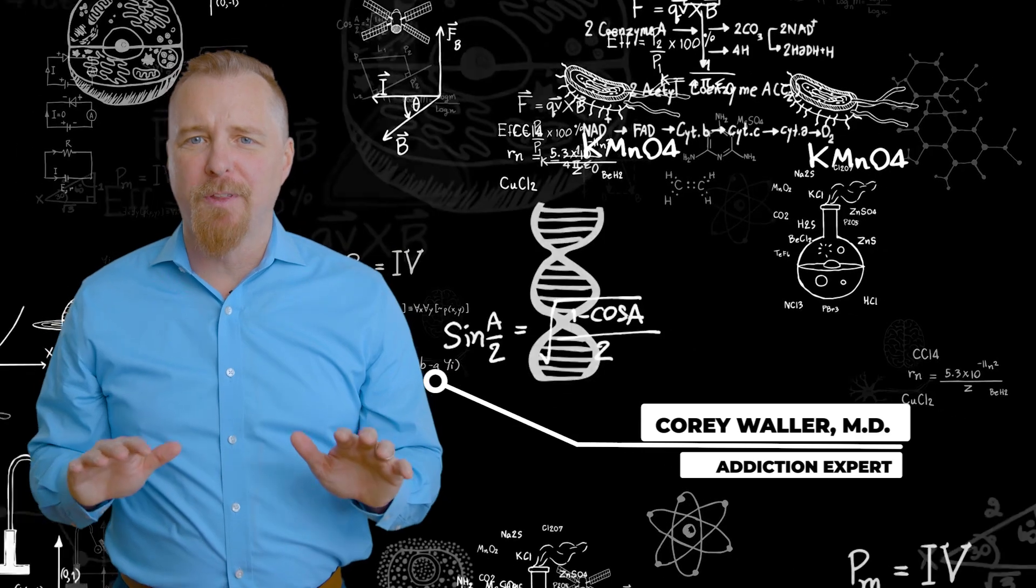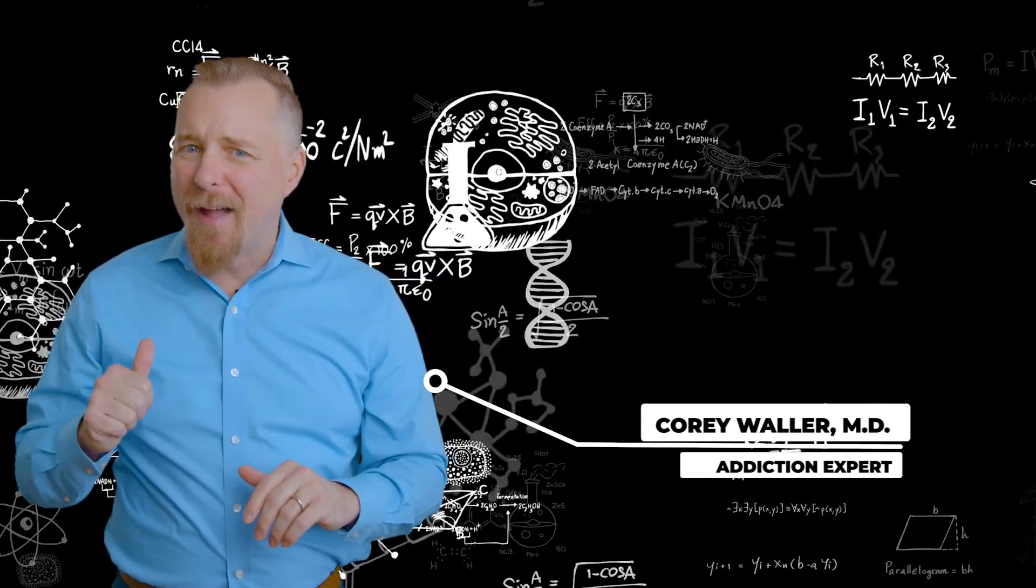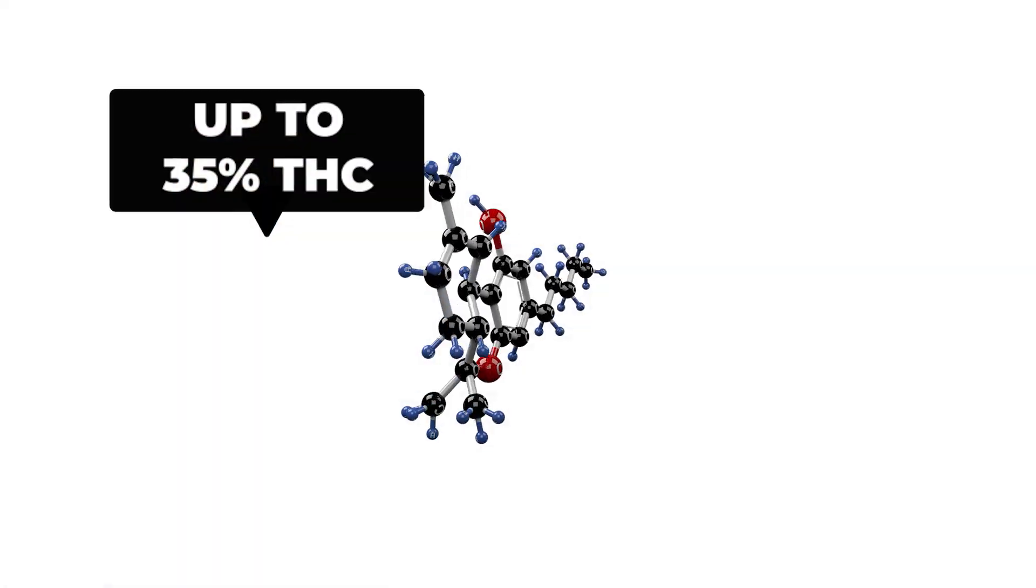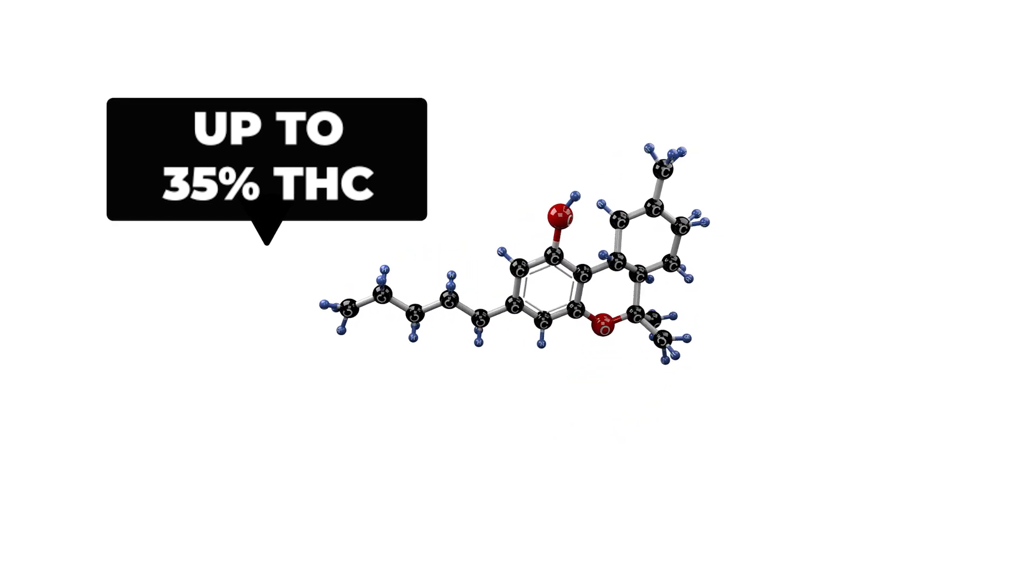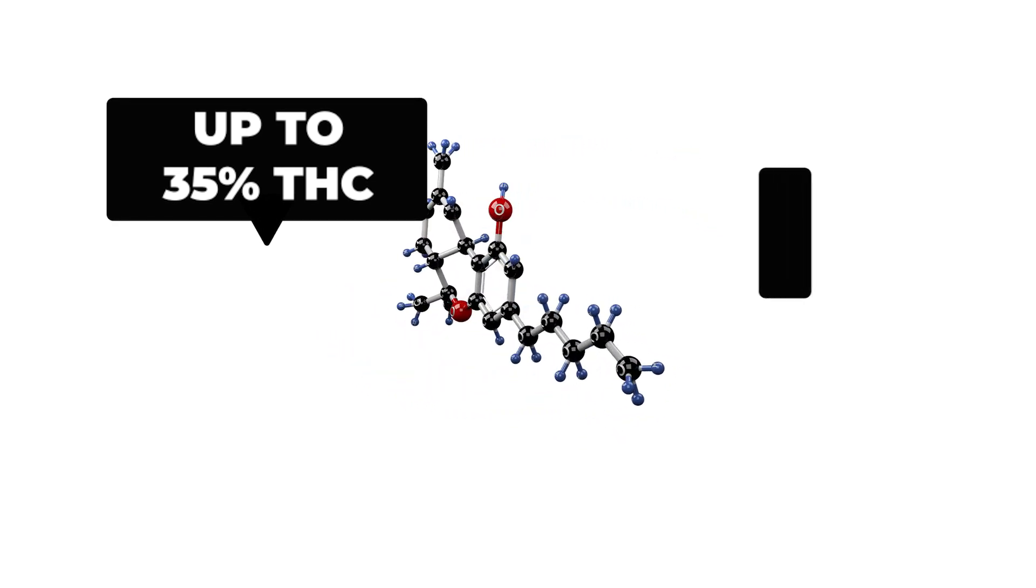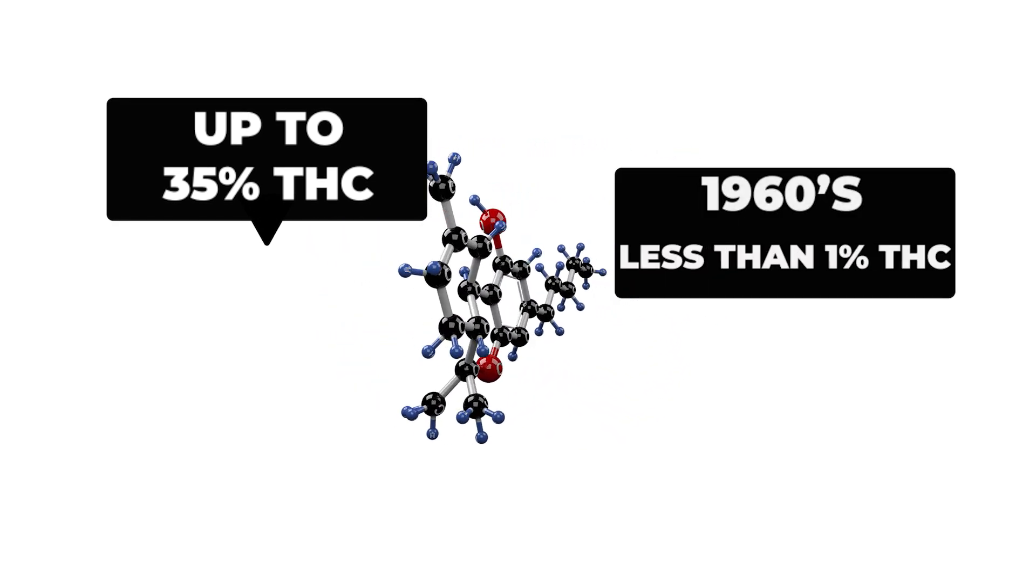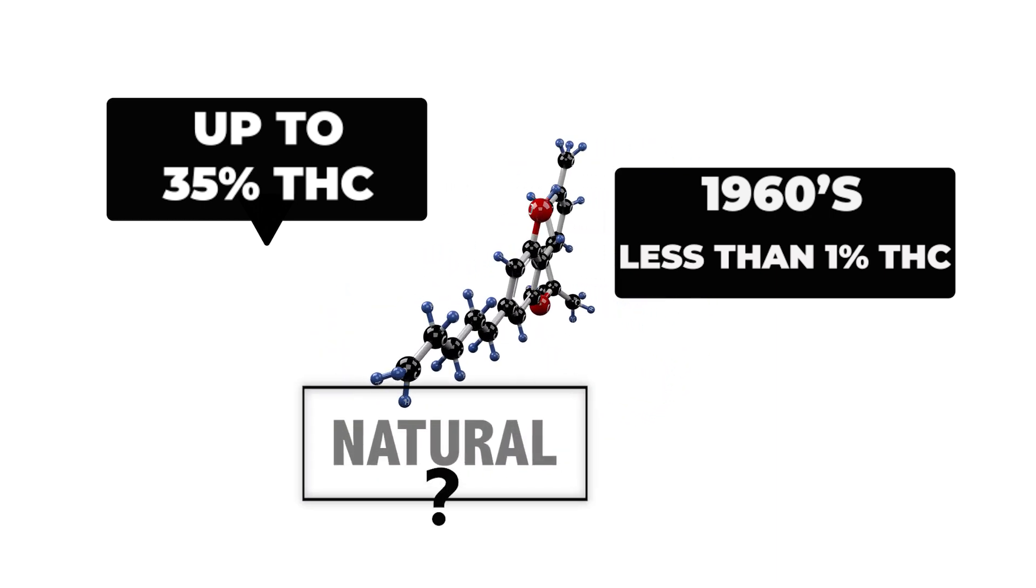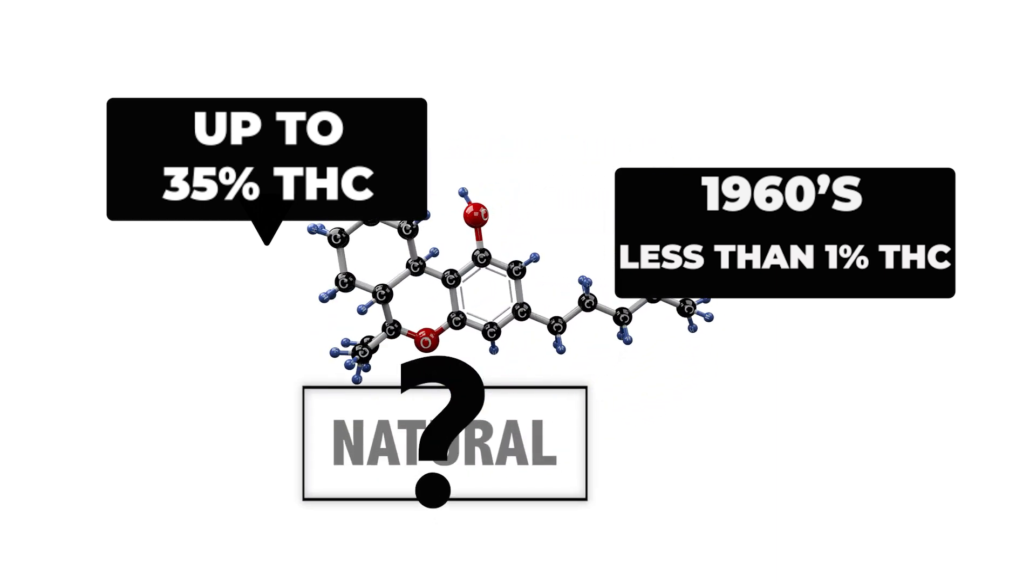Marijuana is very different than it was in the past. In fact, marijuana is a plant that can now contain up to 35% THC. Marijuana in the 60s contained less than 1%, so those that say it's natural need to reread the science.